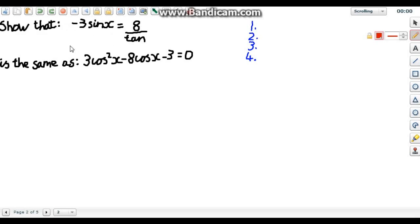Here is an example of a question. We have show that some horrible trig equation is the same as or is equal to some other horrible trig identity. Now the first thing I'll do is write out what it's given us to start with. So we've got minus 3 sine, I will just miss out the x part, is equal to 8 over tan.